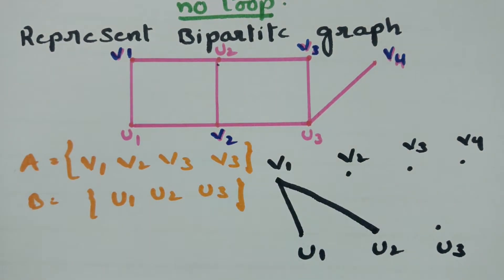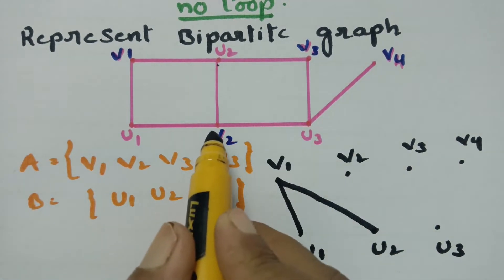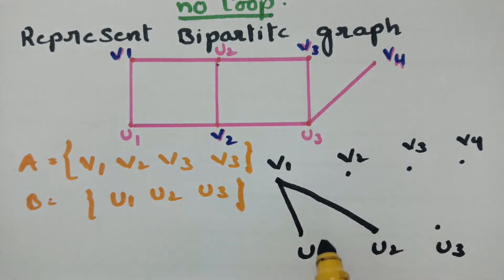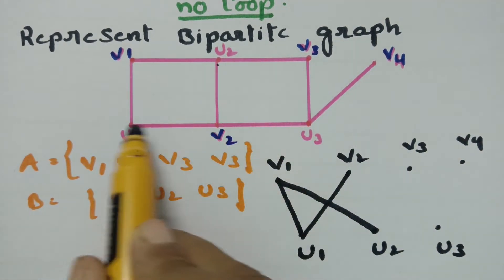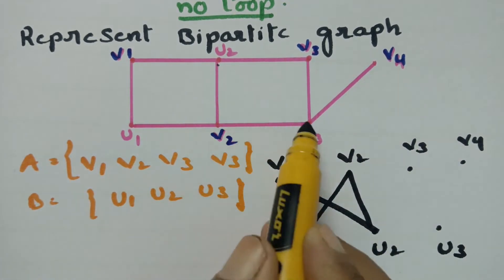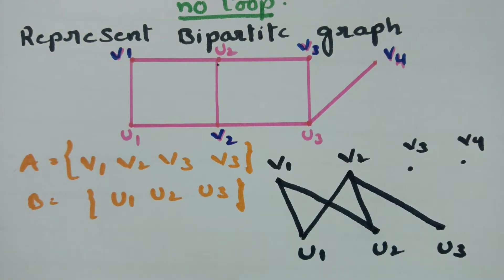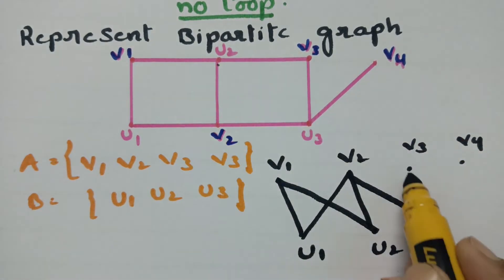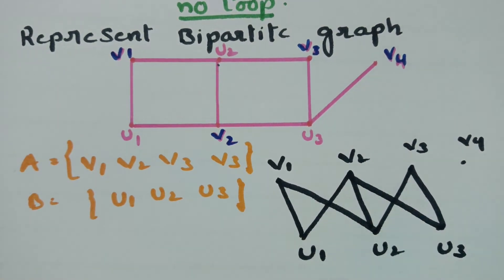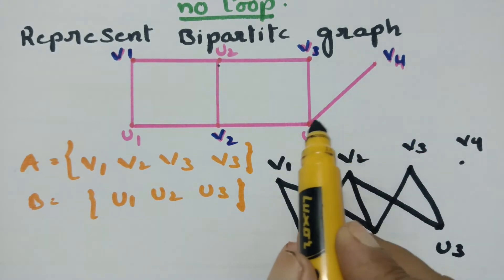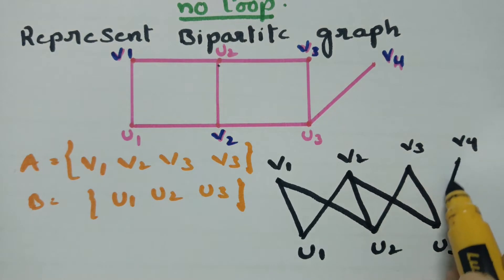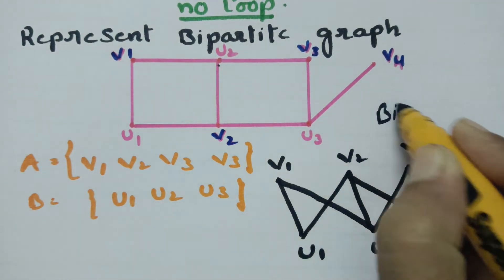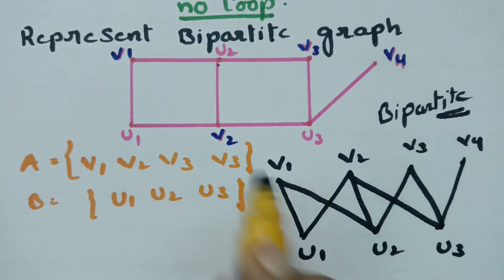Next, v2 has three edges: towards u1, u2, and u3 — so I draw those three connections. Then v3 has edges towards u2 and u3. And v4 has a single edge towards u3. This is how we draw the bipartite graph.